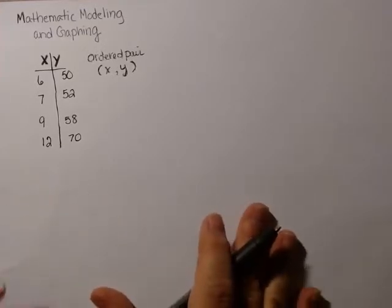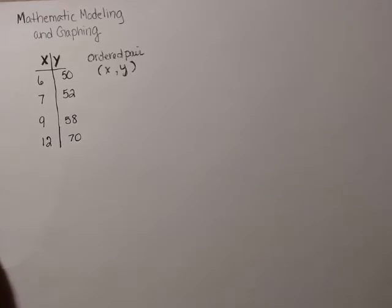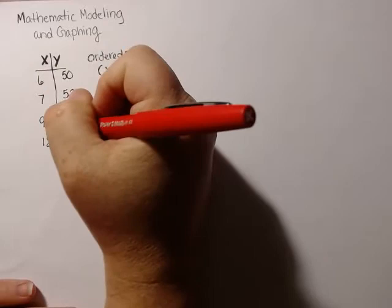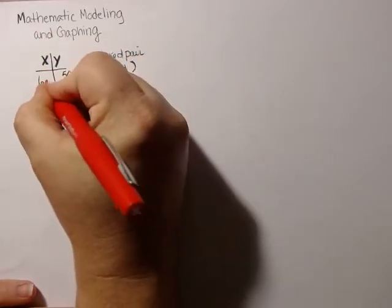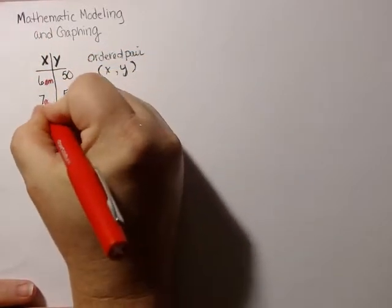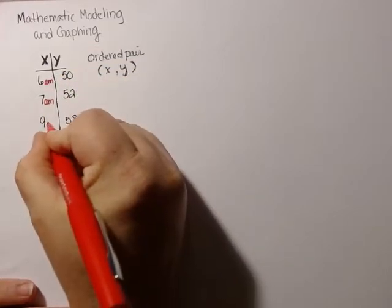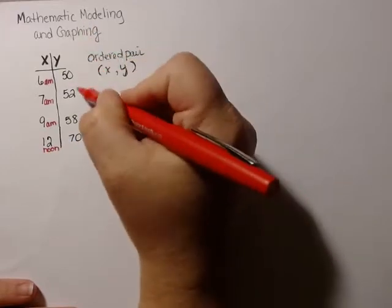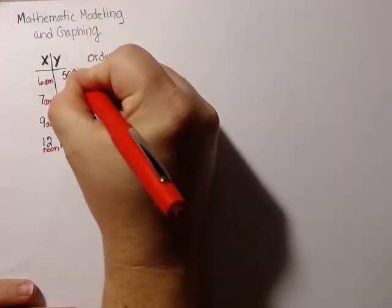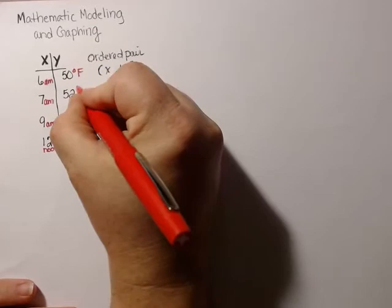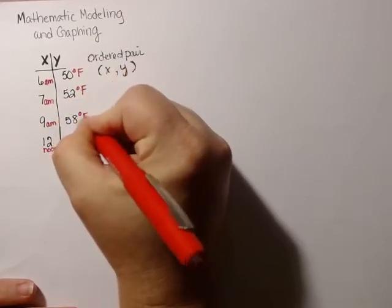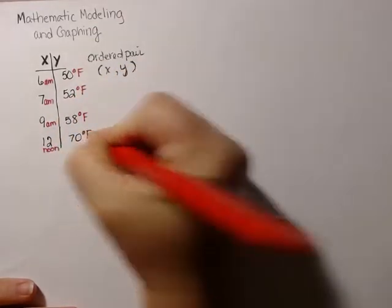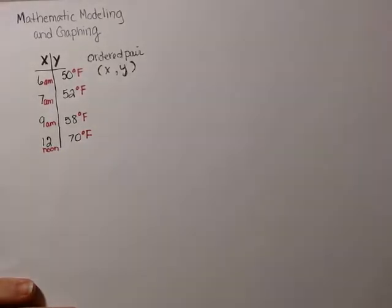So the easiest thing to do would be let's say x is the time of day. So if this is 6 a.m. and this is 7 a.m. and 9 a.m. and this is going to be noon. And then these are temperatures. So if this is 50 degrees Fahrenheit, now it makes a little more sense. Now you can see those relationships and how they change.